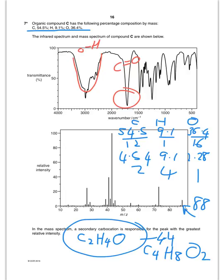Now the big clue they've given me here is that in the mass spectrum, a secondary carbocation is responsible for the peak. Now if it was butanoic acid, you have got that structure there.